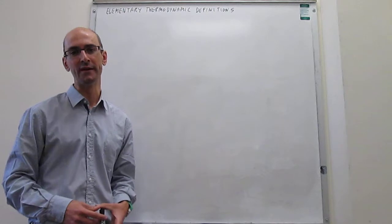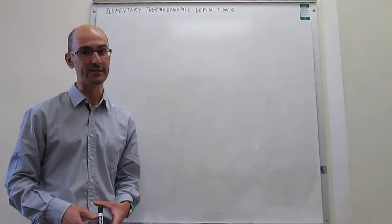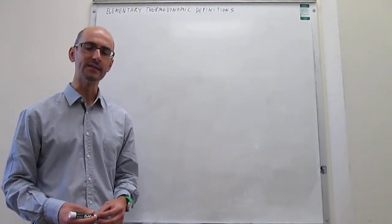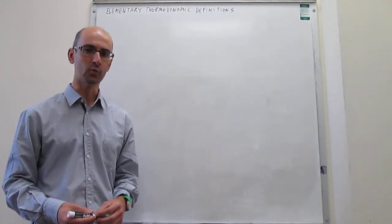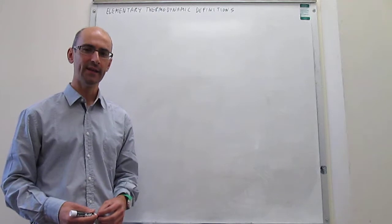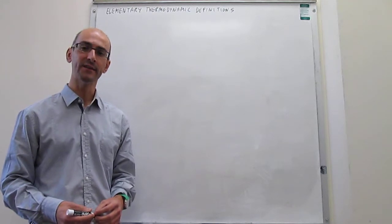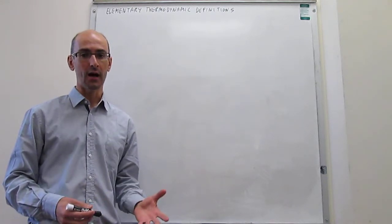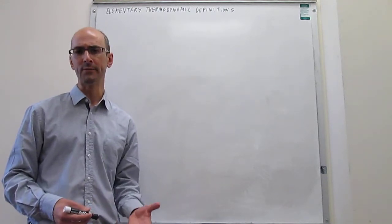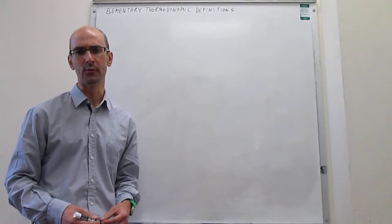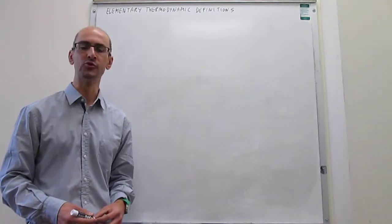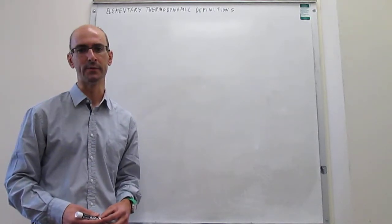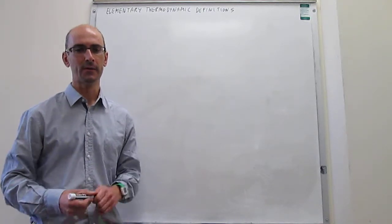The first thing that we need to define is what energy is. Energy is the ability to do work, and it has the units of joules. In chemical systems it's more common to use joules per mole or kilojoules per mole.